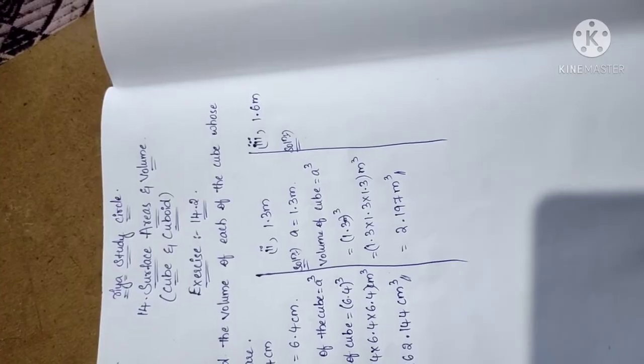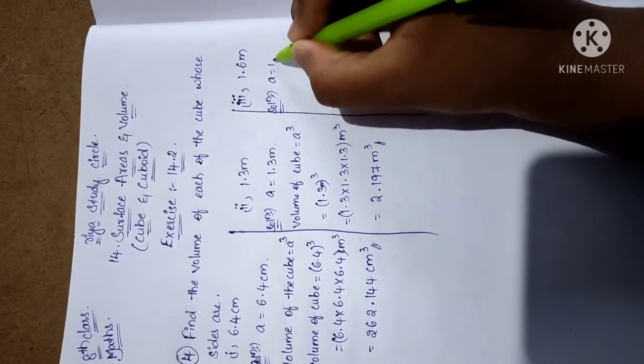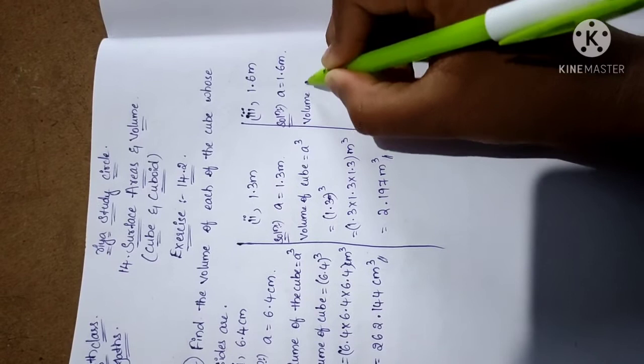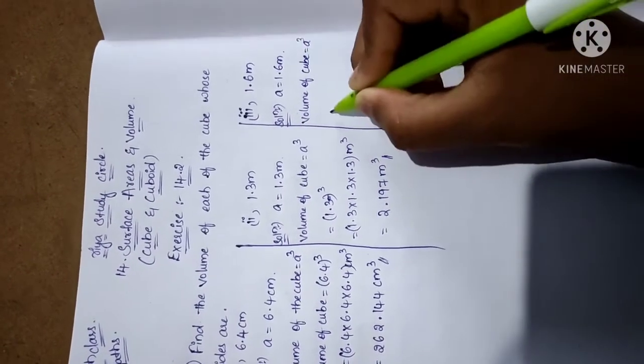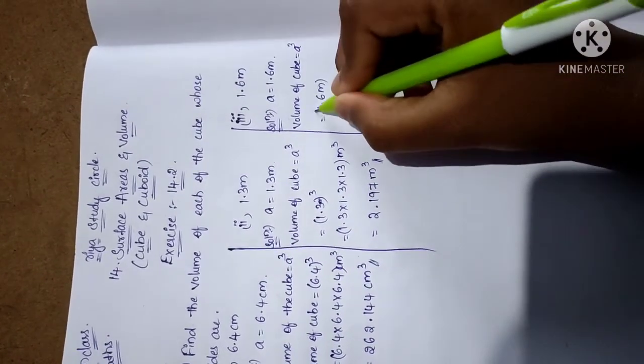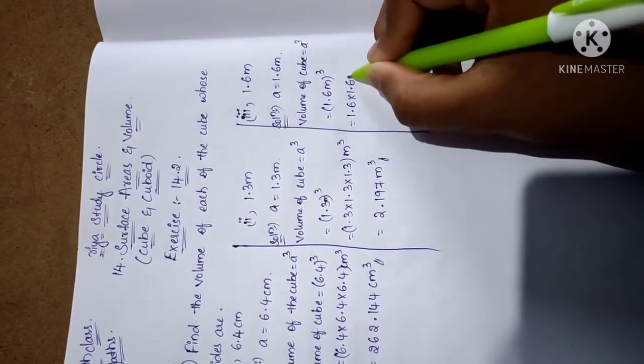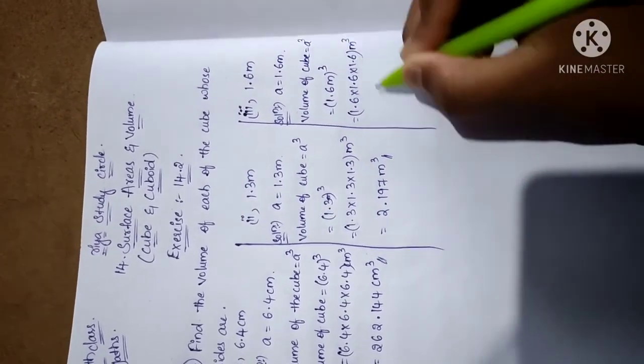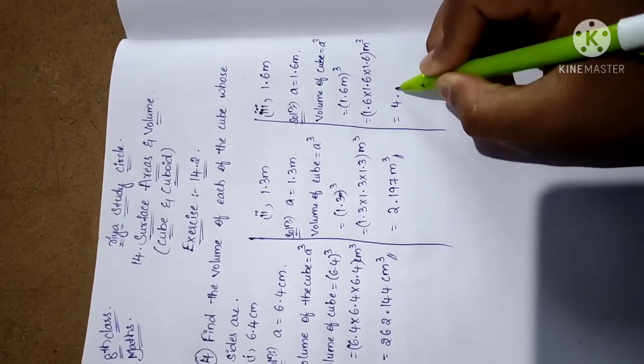Next problem: 1.6 meters, that means a equals 1.6 meters. Using the formula volume equals a³, substitute this value: 1.6³, that is 1.6 × 1.6 × 1.6 m³. The multiplication of these three terms is 4.096 m³.